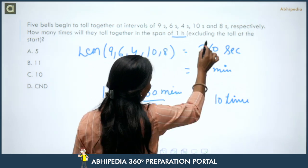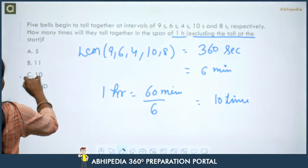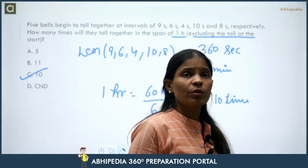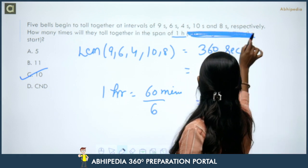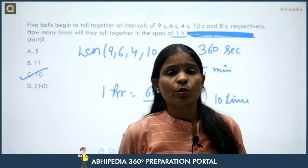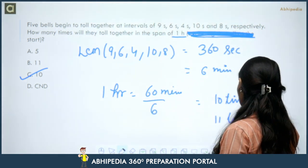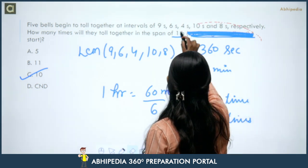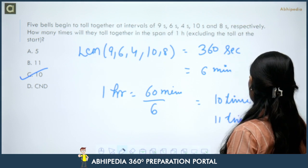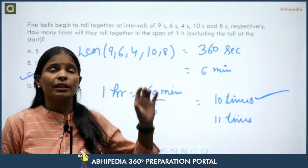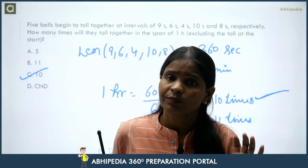The question says excluding the toll at start, so the answer is 10. However, if the question does NOT mention excluding the starting toll, then you must include the first toll and the answer would be 11. This is a common mistake — solving the entire question correctly but ticking the wrong option at the end.